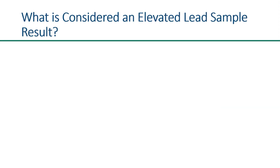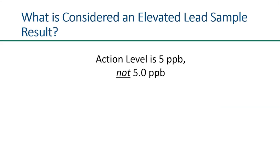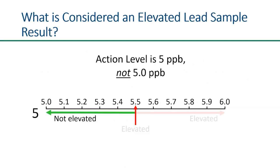That being said, let's go over what is considered an elevated lead result under the law. Since the action level set by the law is five — as opposed to 5.0 — parts per billion, any result greater than or equal to 5.5 parts per billion would be considered elevated. This is because 5.5 rounds up to the nearest integer of six, which exceeds the action level of five parts per billion.